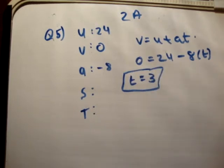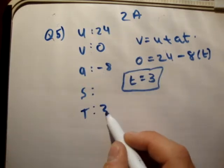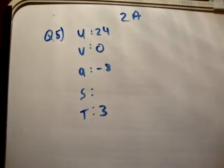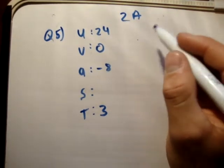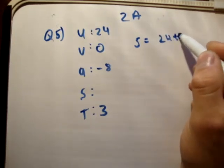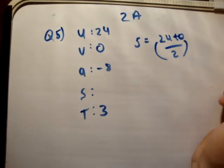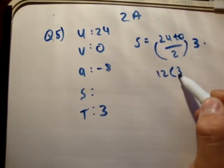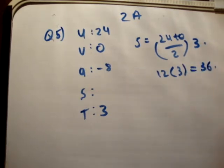Let's say T equals 3. Next we'll get the distance. S equals U plus V over 2 times T. S equals 24 plus 0 over 2 times T. T is 3 seconds. So 12 times 3 equals 36. Check that in the back of the book and we find that's correct. 36 meters is correct.